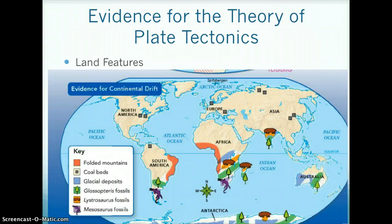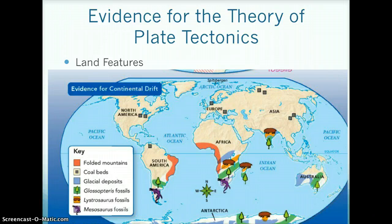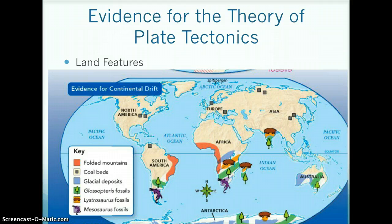A second piece of evidence that helps prove that the continents are moving is that the land features on different continents line up. For example, mountain ranges in Africa and South America line up with each other. Also, the coal beds on the east coast of the United States and Europe line up. This image demonstrates where the mountain ranges line up in South America and Africa, and where the coal beds line up in North America and Europe.